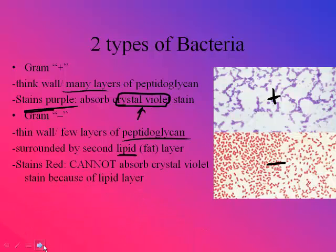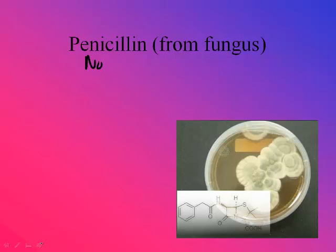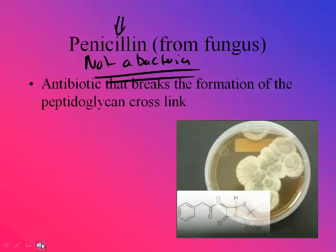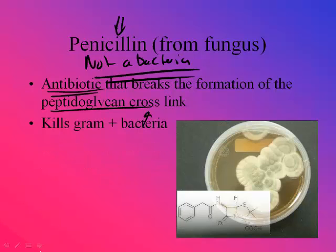When looking at bacteria under the microscope, we can determine if it's gram-positive or gram-negative by adding the crystal violet stain. Now, penicillin — which comes from a fungus, not a bacteria — is a chemical extract. They noticed that other bacteria wouldn't grow around this fungus because of the penicillin compound excreted from the Penicillium fungus. It's an antibiotic: when we have a bacterial infection, we take penicillin because it breaks the cross-links — the peptide bonds — in the peptidoglycan, killing gram-positive bacteria.